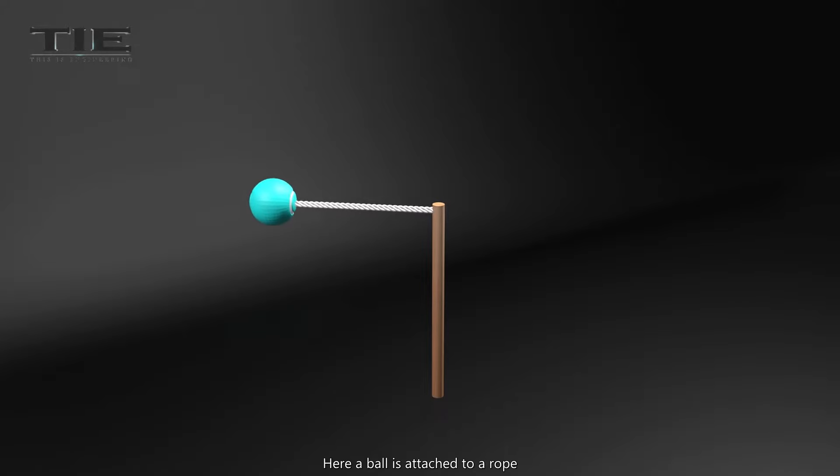Here, a ball is attached to a rope and made to swing in a circle. The swinging ball tends to move away from the pole.